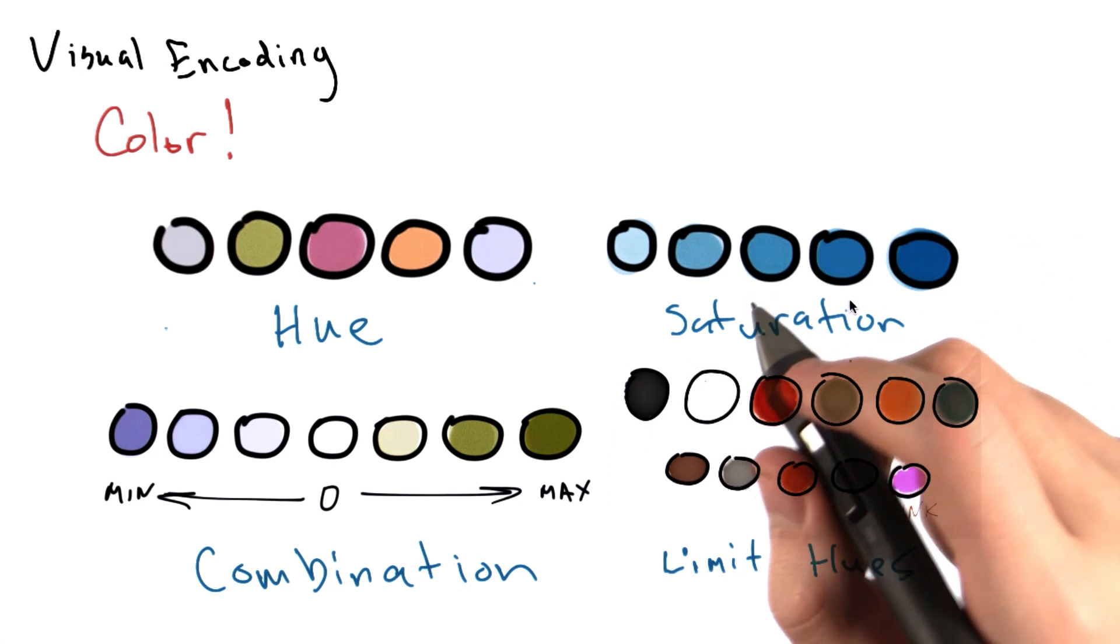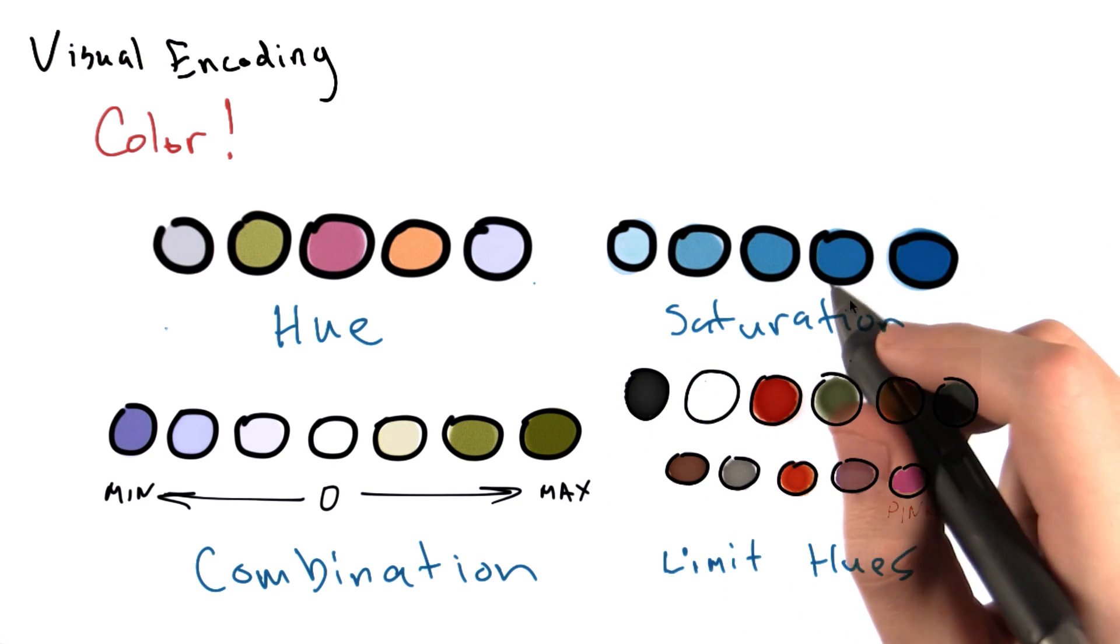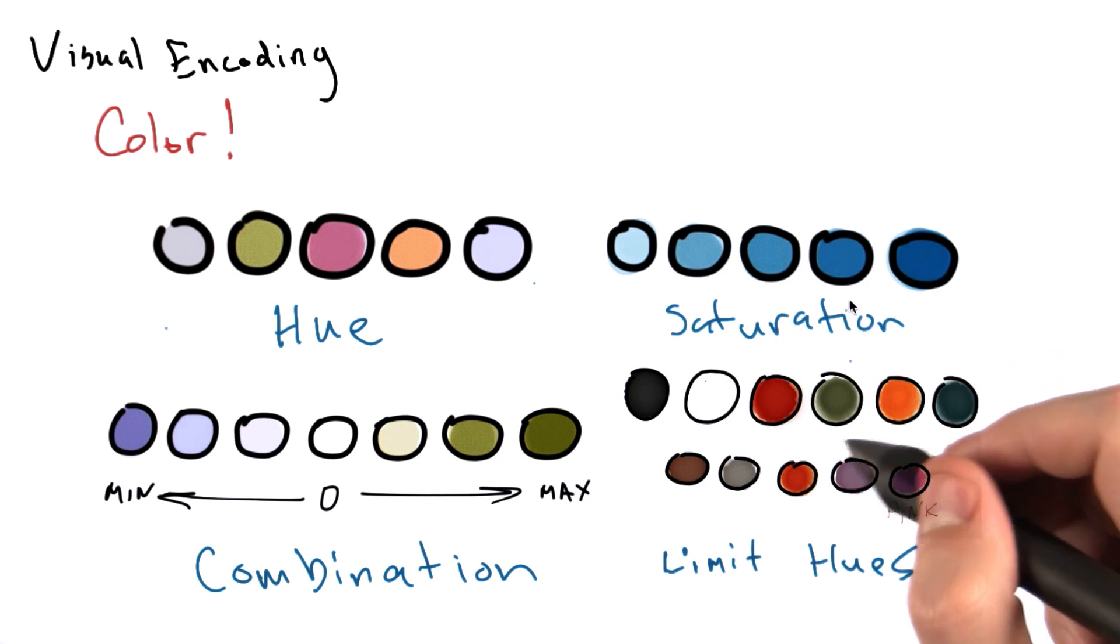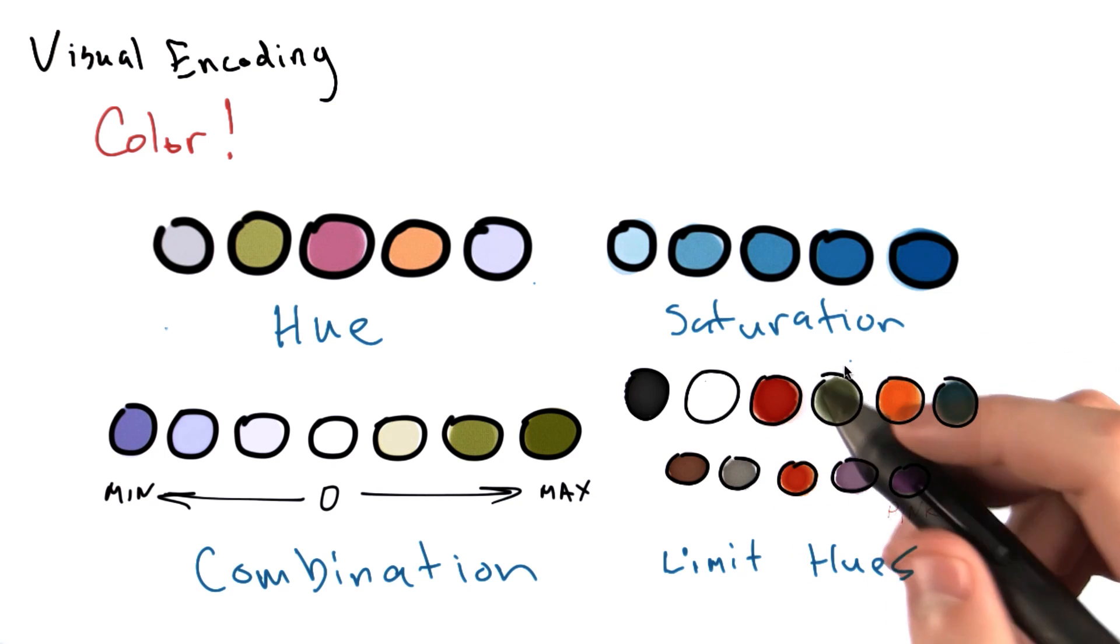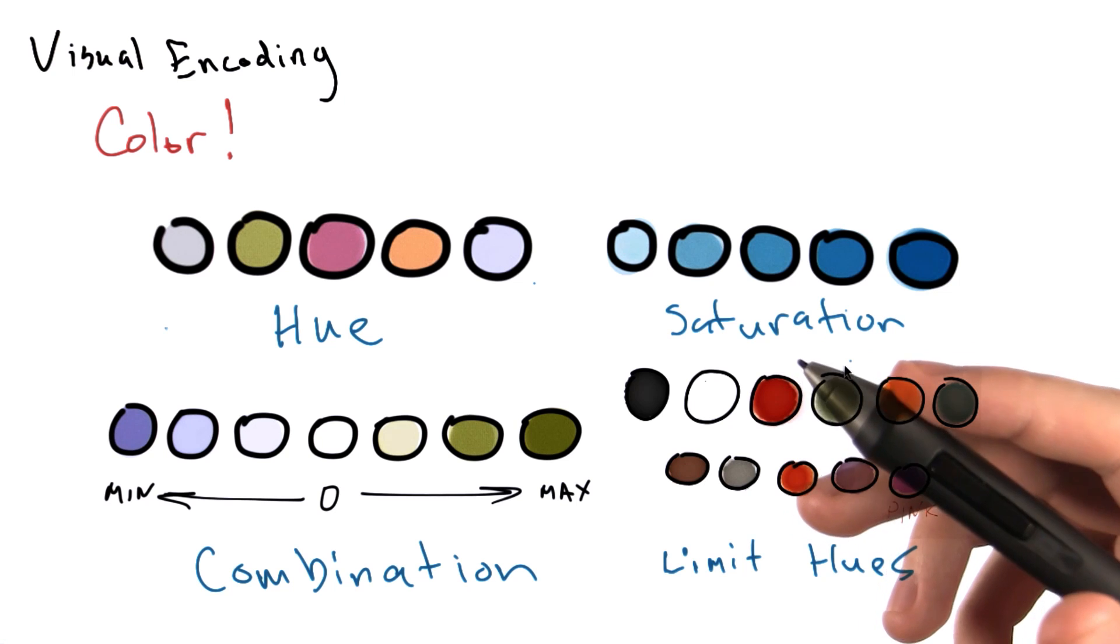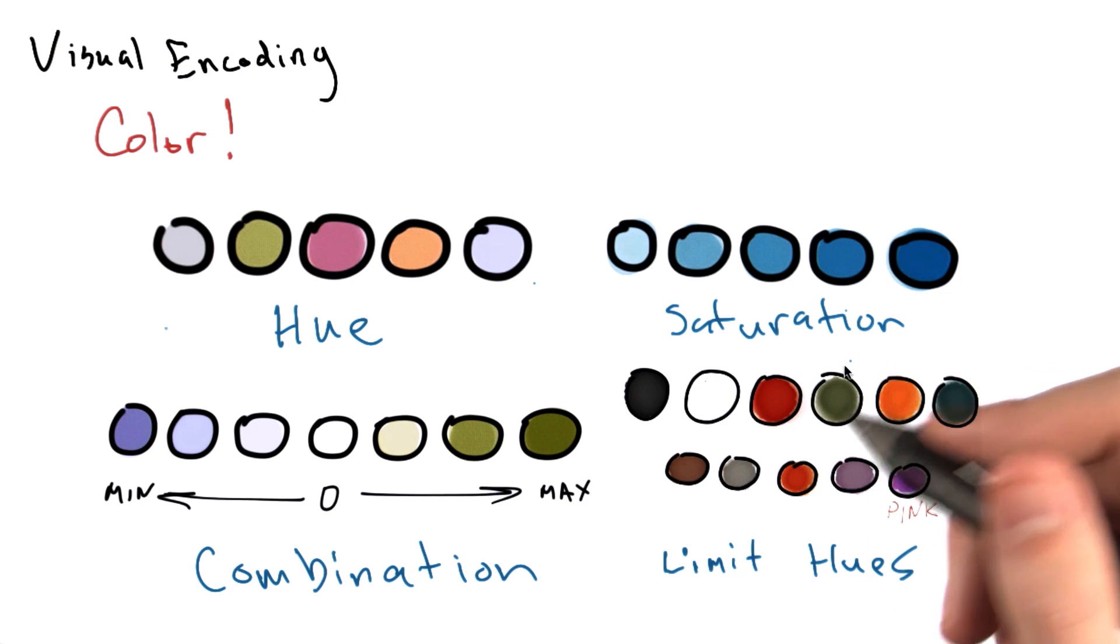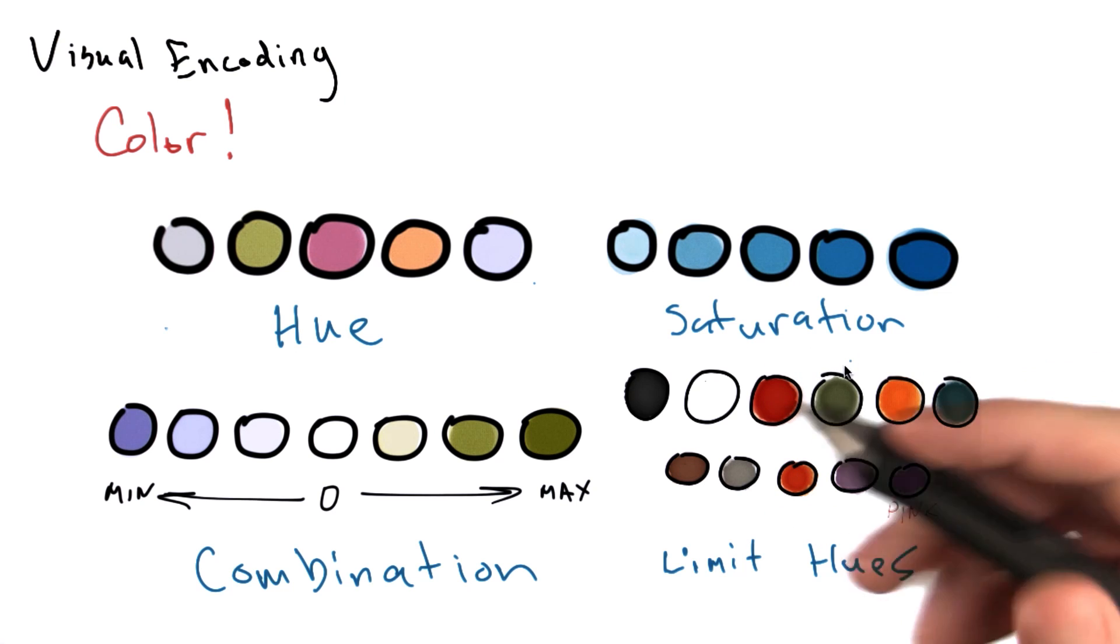When using color to encode information, a pretty good general rule of thumb is that you shouldn't use more than a dozen colors to encode categories effectively. If you were to use more than 12 colors, it might be hard to quickly differentiate between categories, and your visualization is going to become a little bit harder to parse.